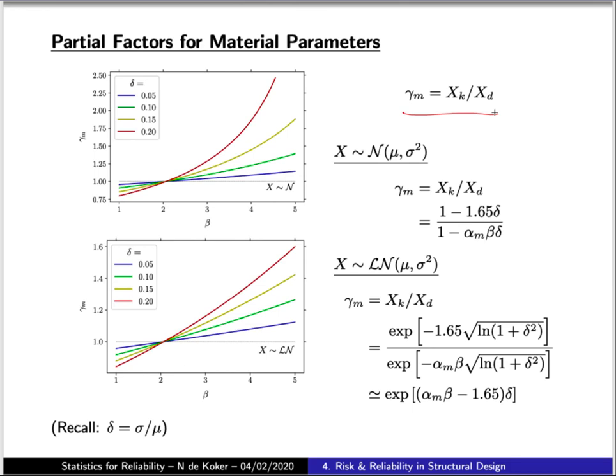Remember that the design value represents a fractile that corresponds to the probability of failure, which is to say it corresponds to a standard normal value of the sensitivity of the material parameter times the target reliability. This gives you a Z of alpha value corresponding to your probability of failure.